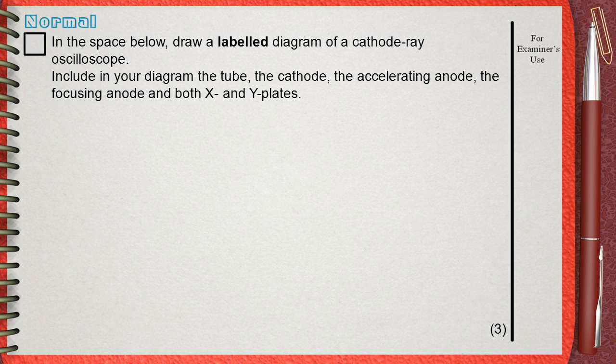In the space below, draw a labeled diagram of a cathode ray oscilloscope. Include in your diagram the tube, the cathode, the accelerating anode, the focusing anode, and both X and Y plates.